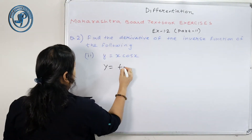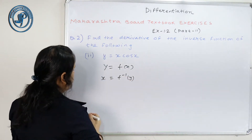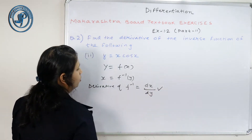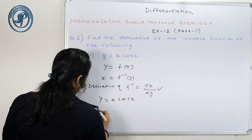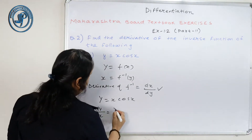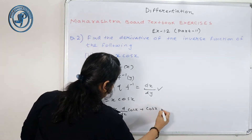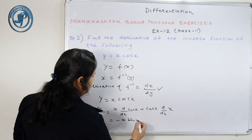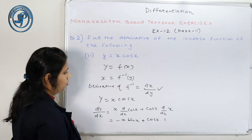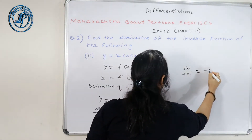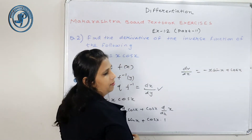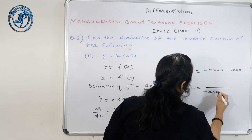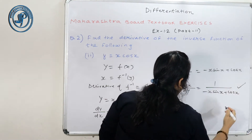इस question में भी हमें यही करना है. अगर y equals to fx है, then f inverse equals to f inverse y. और मुझे derivative of inverse function find करना है, which is dx upon dy. मेरे पास y = x cos x है. So मैं पहले dy by dx निकाल लेती हूँ: x derivative of cos x plus cos x derivative of x = minus x sin x plus cos x. But I need to find the derivative of inverse, that is dx by dy = 1 upon (cos x minus x sin x). So this is my answer.